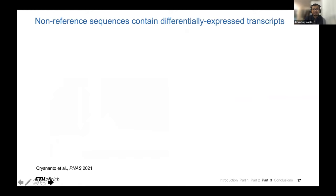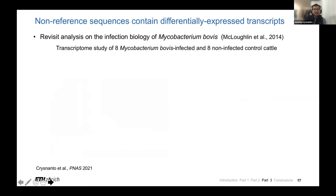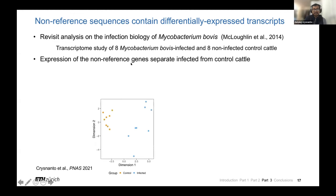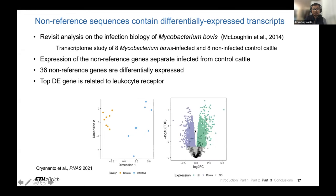Because we found abundant transcriptionally active elements, we then asked whether we could also discover differentially expressed transcripts from these pan-genomes. For this purpose, we revisited analysis on the infection biology of mycobacterium. We performed a transcriptome study on this non-reference sequence on infected and control cattle. When we look at only expression of these putative non-reference genes we discovered, we could separate infected from control cattle, indicating that this expression of genes is actually informative. We found around 36 non-reference genes are differentially expressed. The top differentially expressed gene is related to a lectin receptor, which is not present in the reference sequence, but is present in pan-genomes.